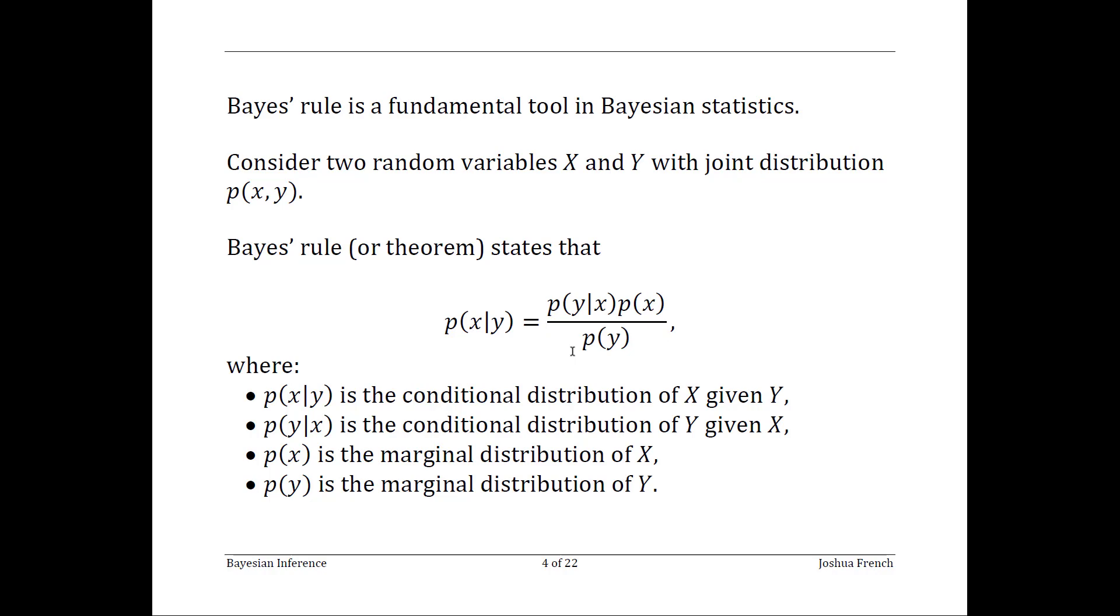Sometimes this is stated in terms of probability events instead, in which case we might say that the probability of event x given event y is the probability of event y conditional on event x times the probability of event x divided by the probability of y. So those are two different approaches to understanding Bayes' rule, but both are commonly used in Bayesian statistics.